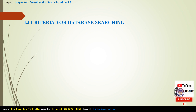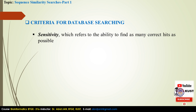Criteria for database searching: there are unique requirements for implementing algorithms for sequence database searches. The first criterion is sensitivity, which refers to the ability to find as many correct hits as possible. It is measured by the extent of inclusion of correctly identified sequence members of the same family. These correct hits are considered true positives in the searching exercise.